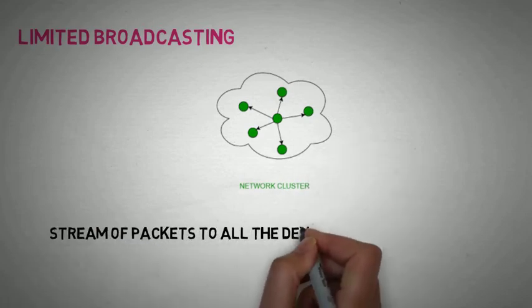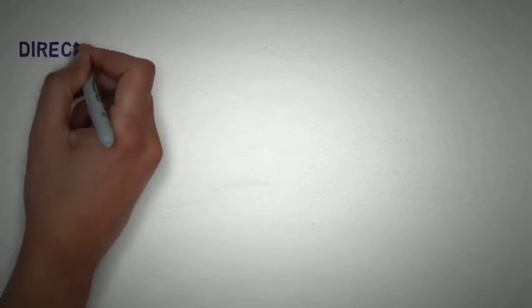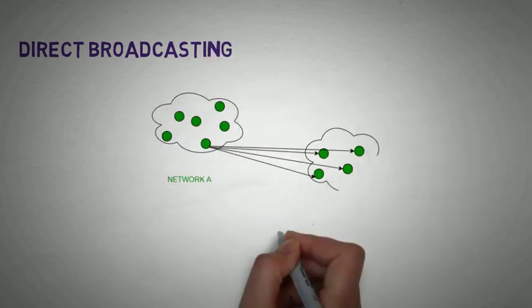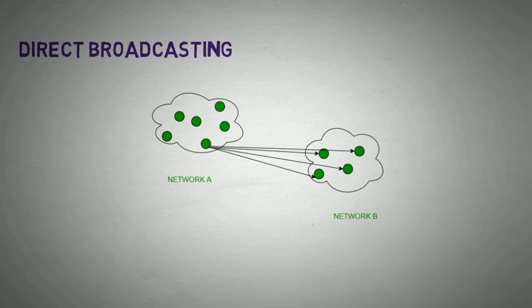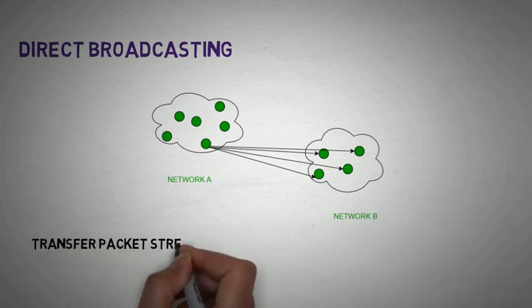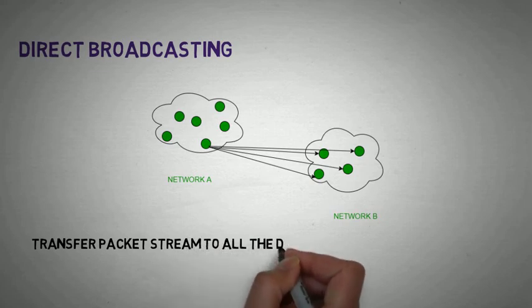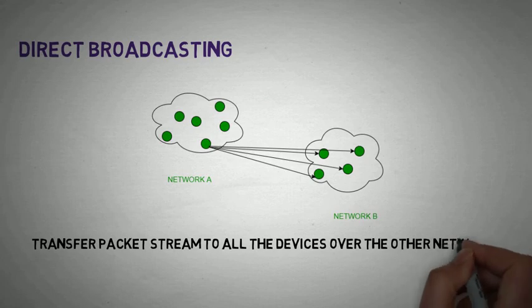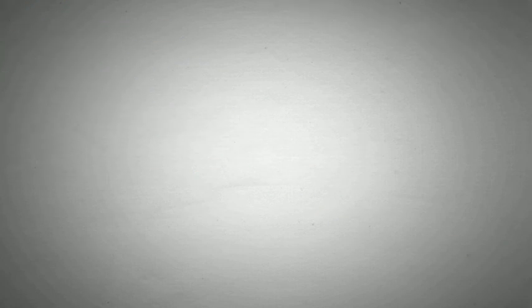Let's see about directed broadcast. In directed broadcast, the packet stream goes to all the devices over the other networks, which means the data will be sent to all the devices of other network.